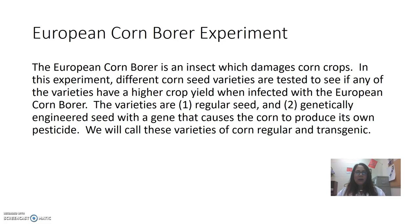I'm using an example of an experiment that was not in Lab 0-1 — it's one I've used in the past. It's the European corn borer experiment. The European corn borer is an insect which damages corn crops; it bores into the corn and kills it. In this experiment, different corn seed varieties are tested to see if any of the varieties have a higher crop yield when infected with the European corn borer. The varieties are: number one, regular corn seed, and number two,